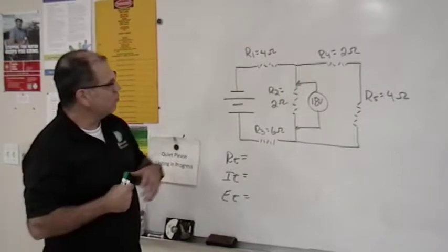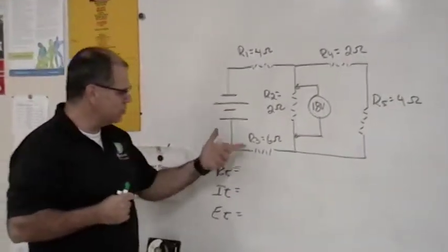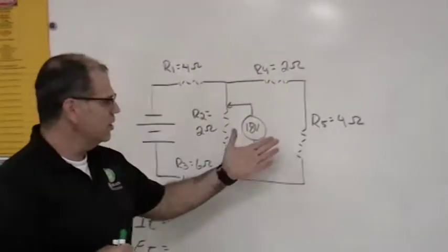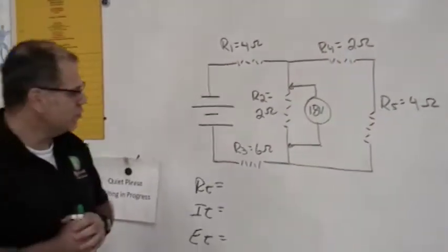Resistor 1 is 4 ohms, resistor 2 is 2 ohms, resistor 3 is 6, resistor 4 is 2 ohms, and resistor 5 is 4 ohms.